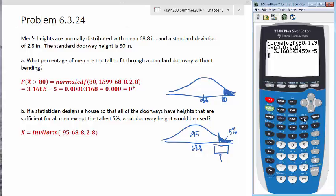Again, we're going to say second function and distribution. We're going to look for the inverse norm which is the third one. I'm going to hit 3. And then we're going to put 0.95, comma, and then 68.8, comma, and then 2.8 as our standard deviation. Parentheses, enter.